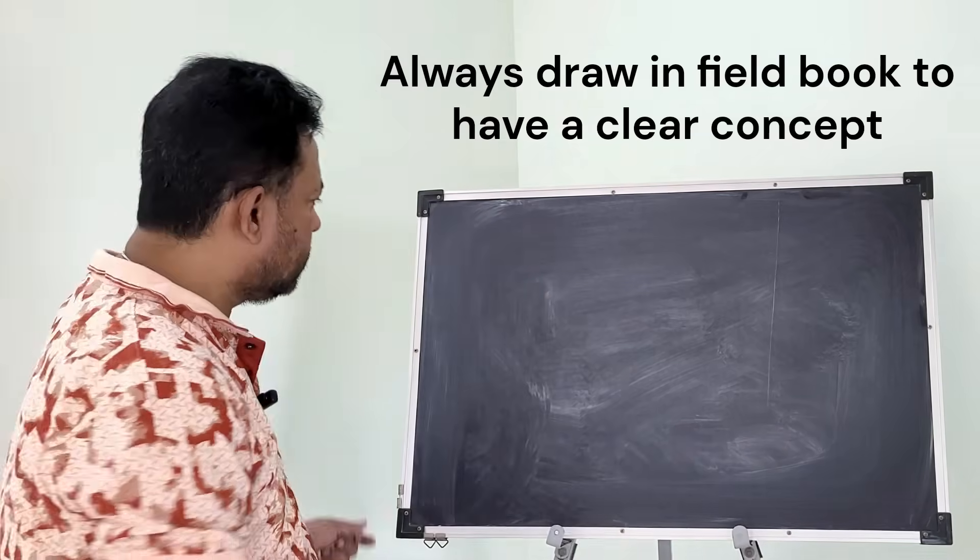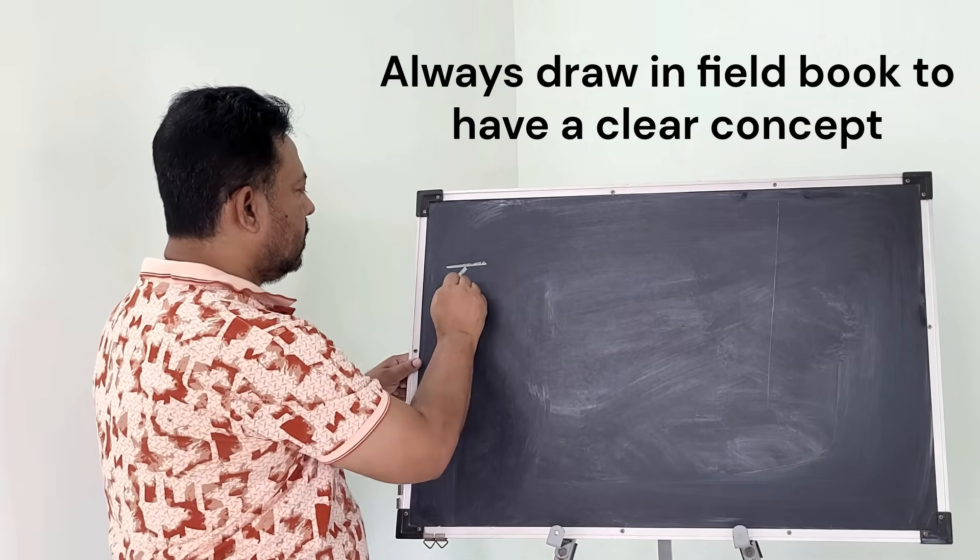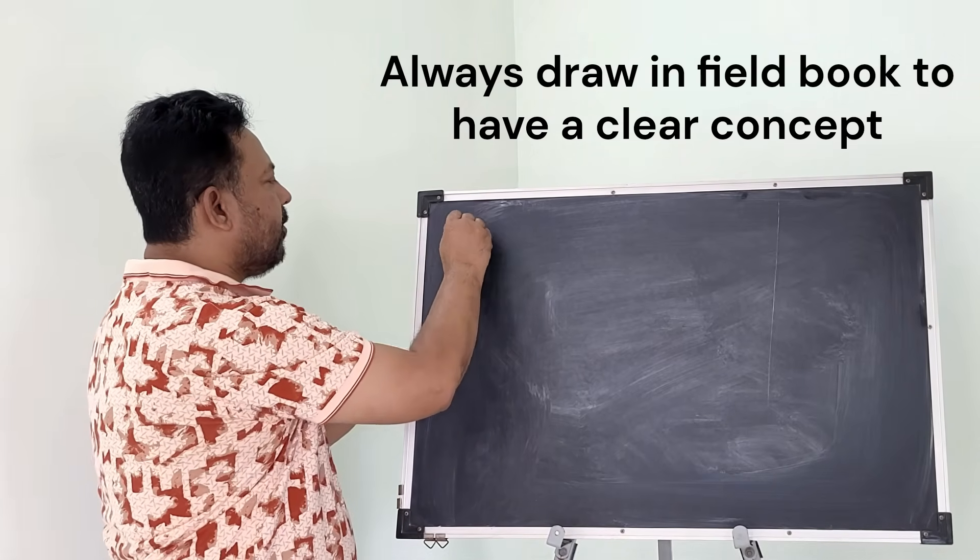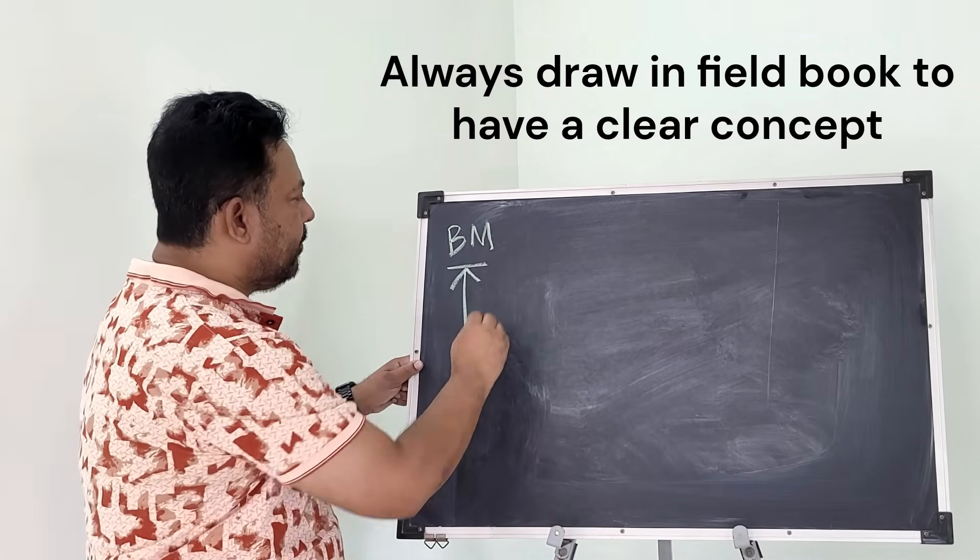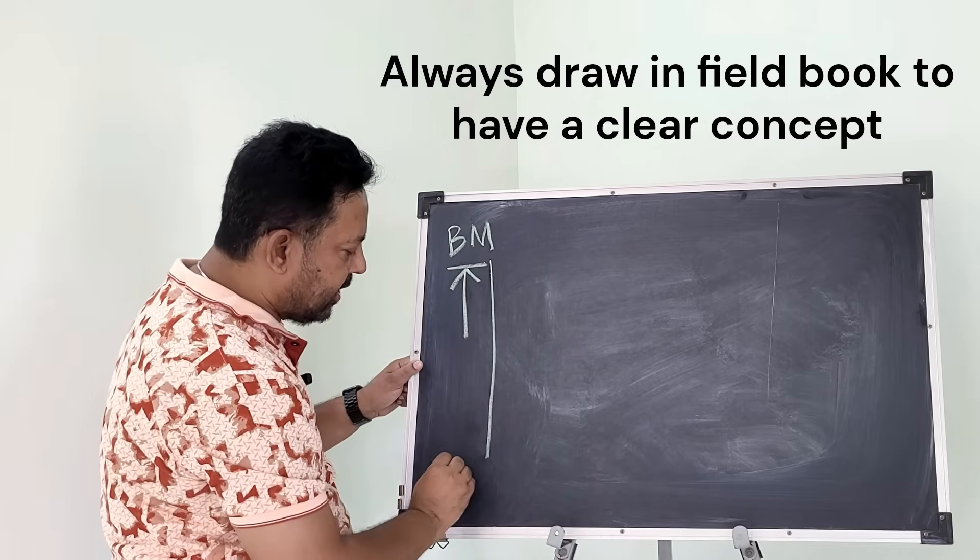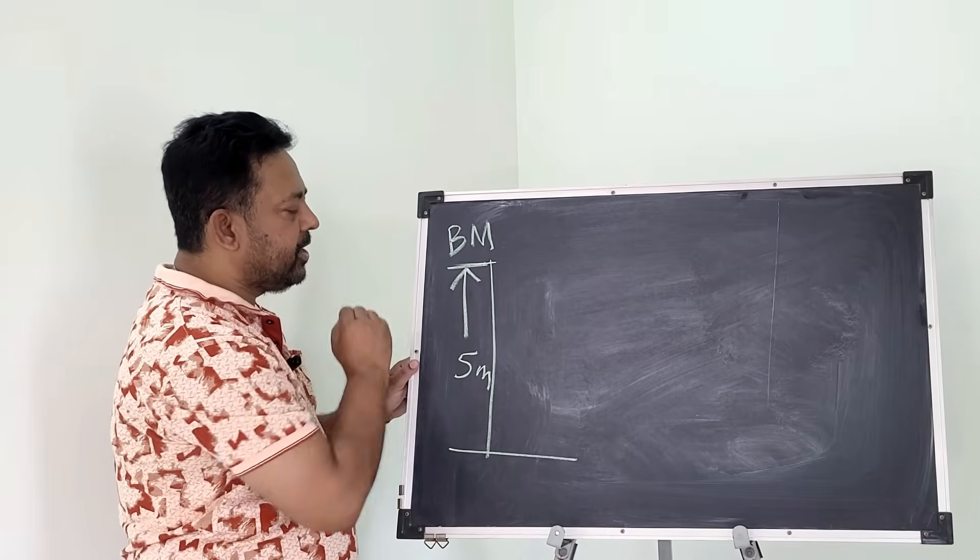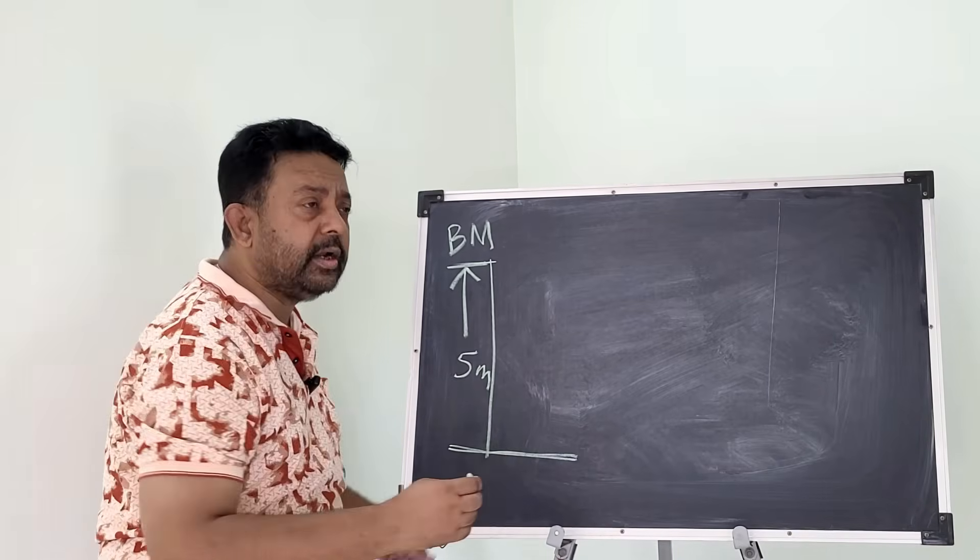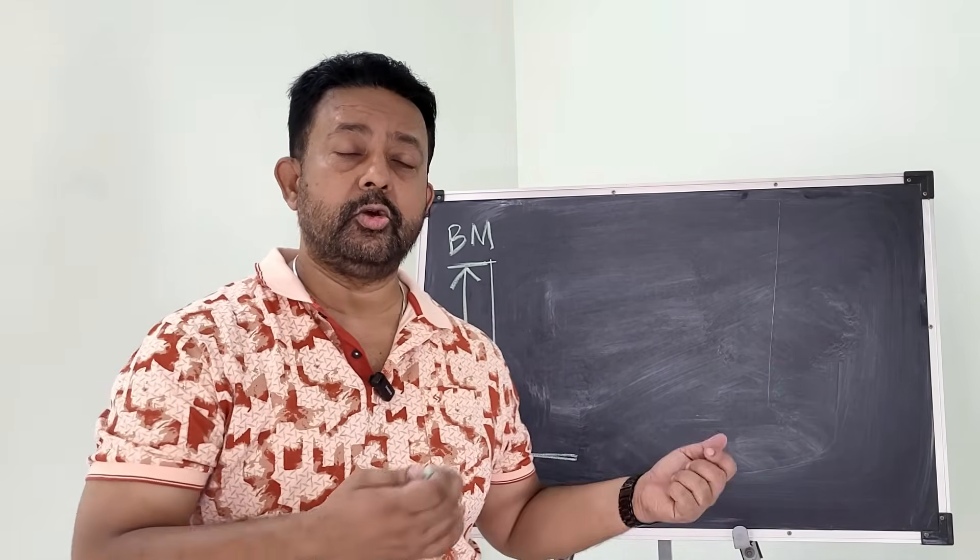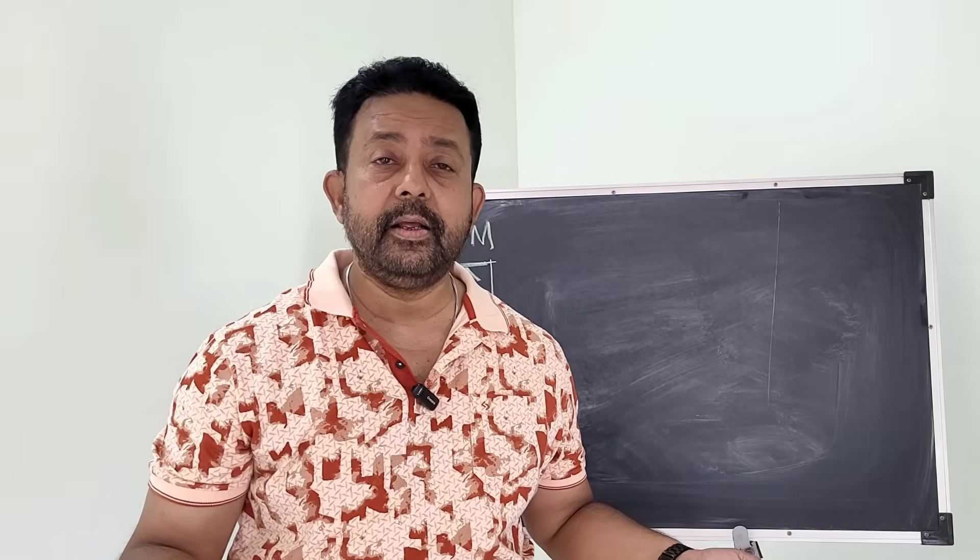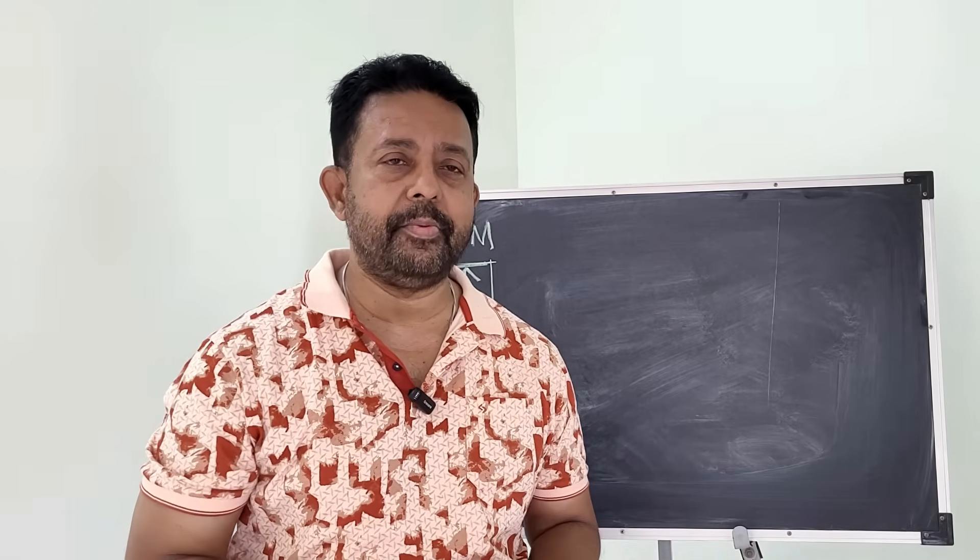Okay, let's draw it on a chalkboard. Suppose this is our benchmark, and the benchmark says my datum is, say, five meters below this benchmark point. Whatever datum it may be, it may be your sounding datum, your LAT lowest astronomical tide, or it may be chart datum.